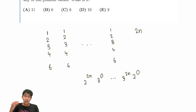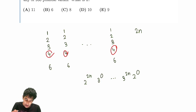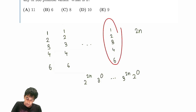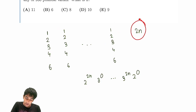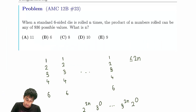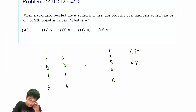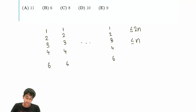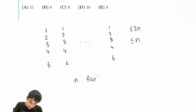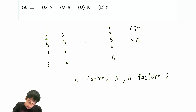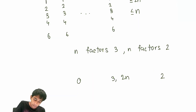Unfortunately not, because while the power of 2 can be as large as 2n (since 4 = 2² can appear n times), there's at most one factor of 3 in each die roll. So the total number of factors of 3 is at most n. With exactly 2n total prime factors, you can have anywhere from 0 to n factors of 3 — giving n+1 possibilities.